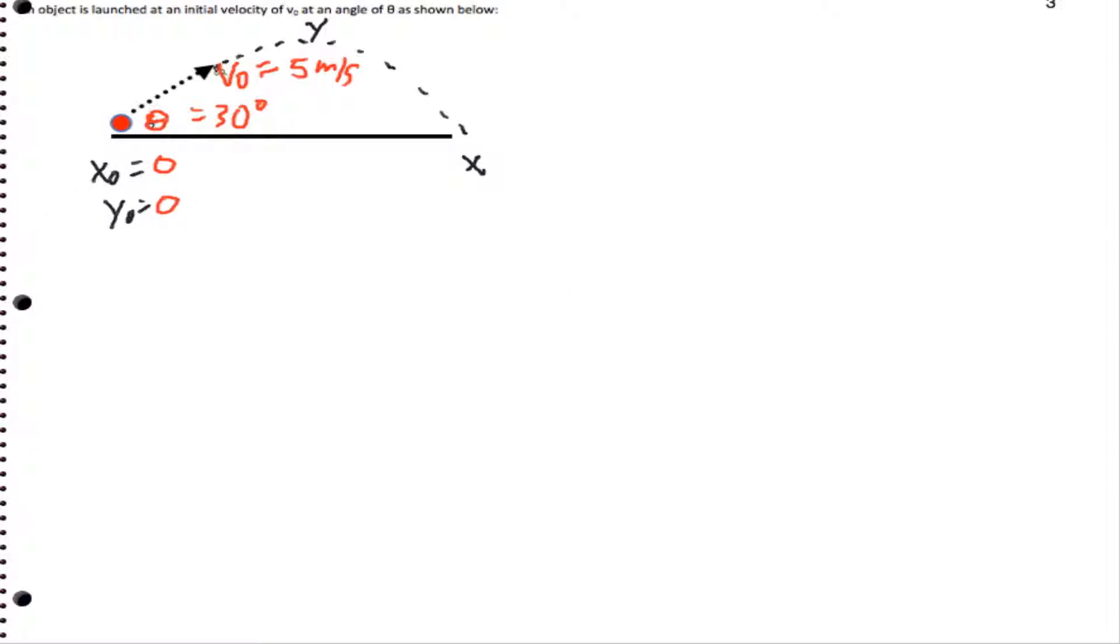And we're going to solve for things in terms of red ink. So y0 is 0. So I know that my v0 in the x direction, well that's going to be v0 cosine theta using trig, and in the y direction I'll actually get something similar, so v0y.